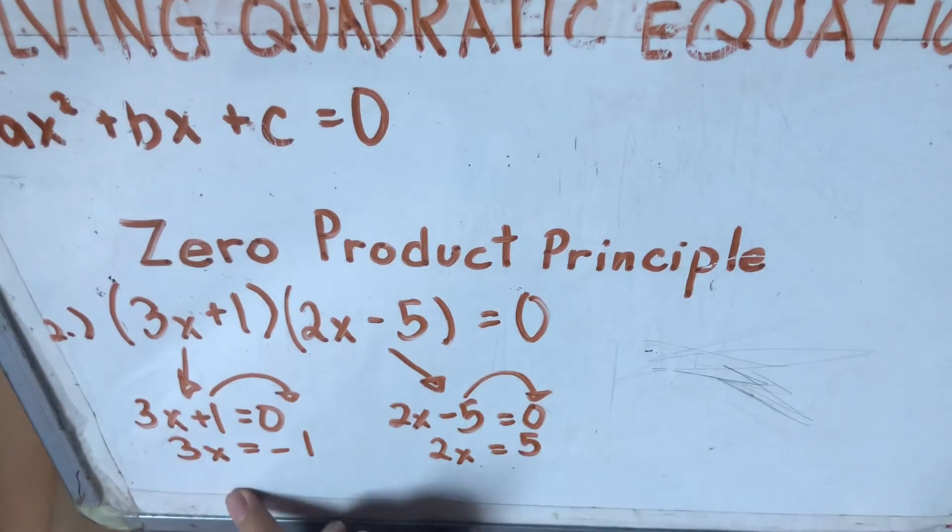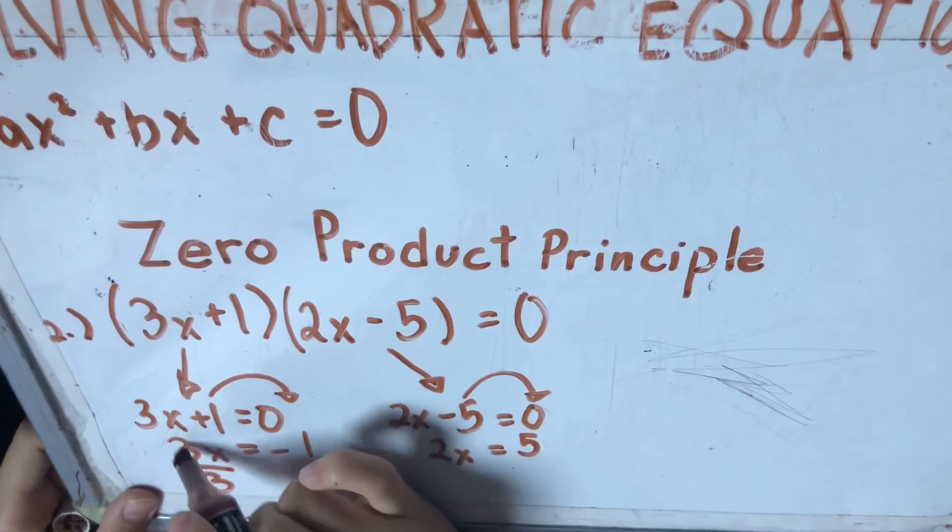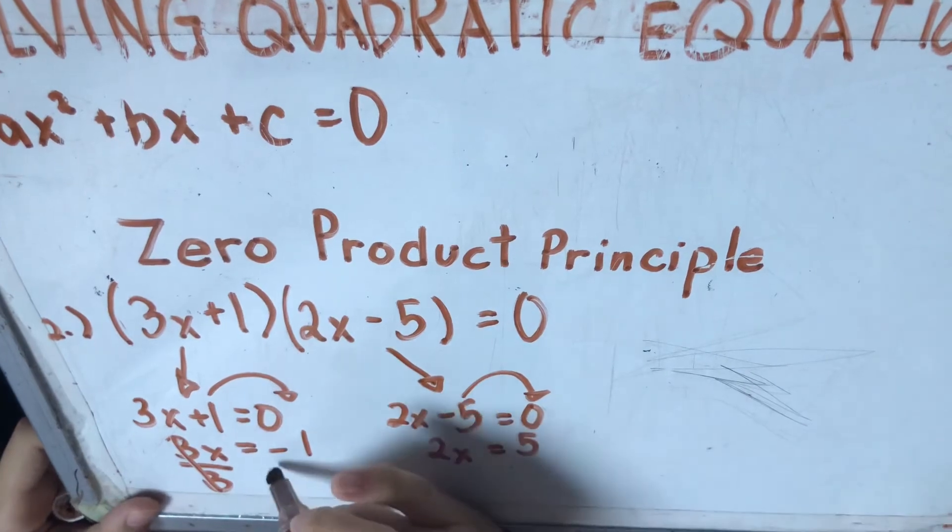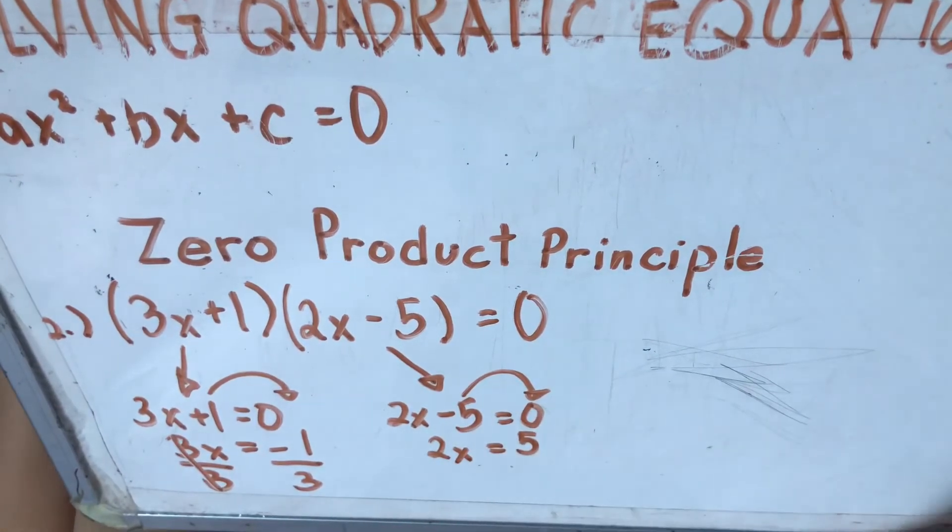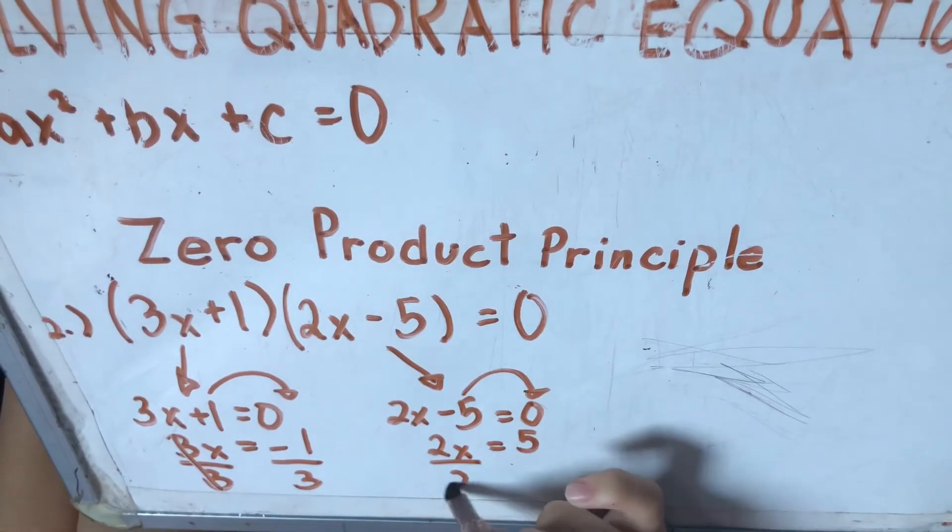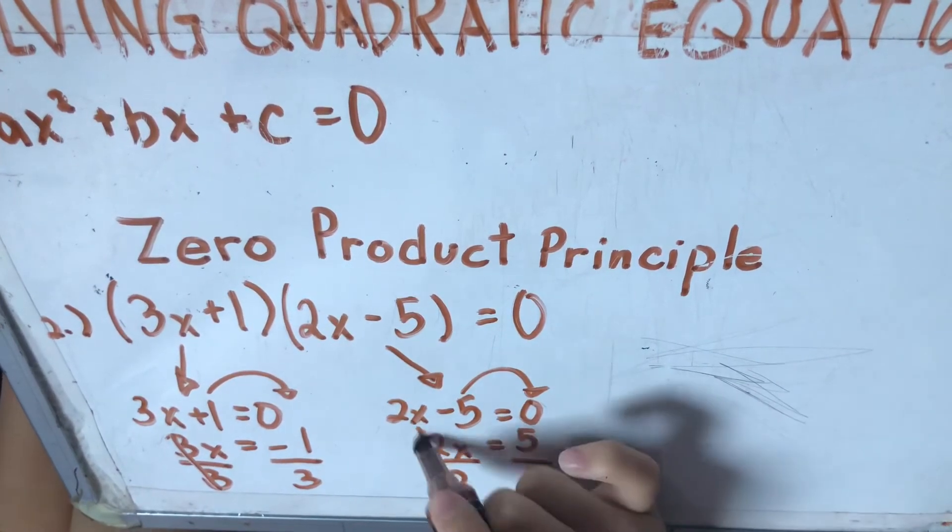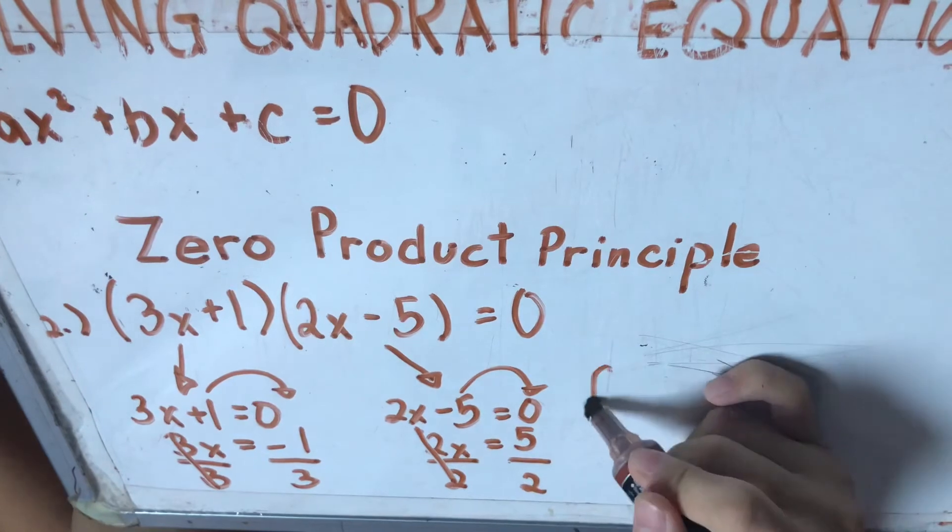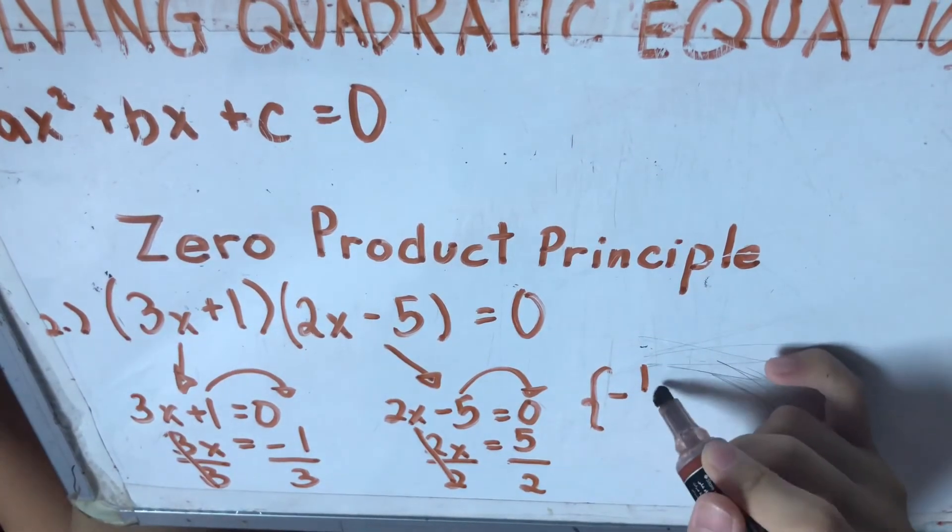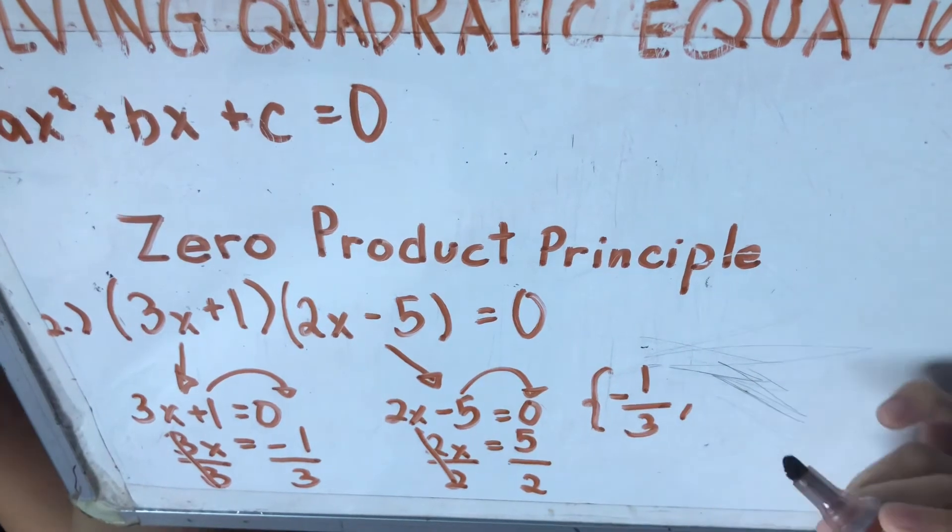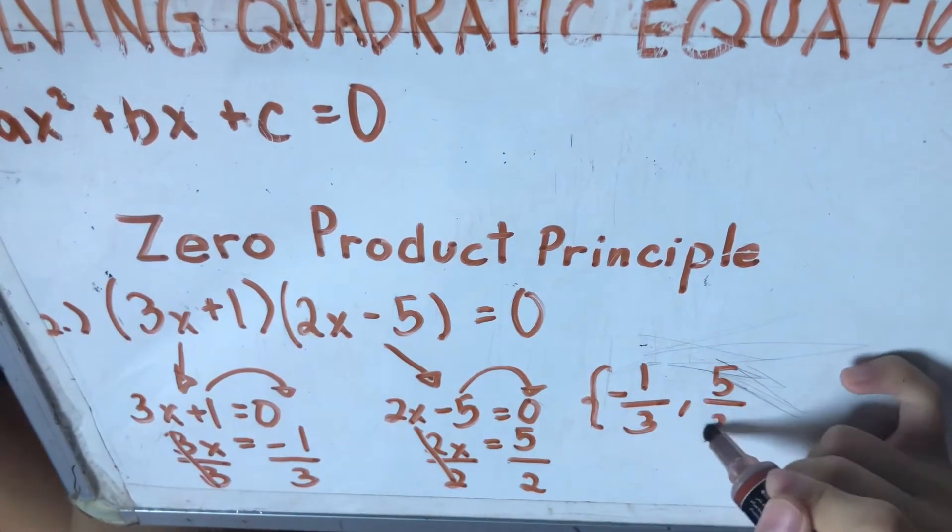Then, para mahanap natin value ni x, divide natin sila sa 3. So ito yung unang value na negative 1/3. Tapos dito naman, divide natin sila sa 2. So ang solution set is negative 1/3 at saka 5/2.